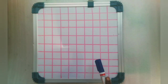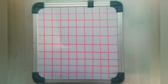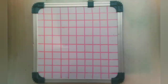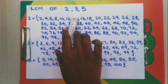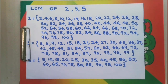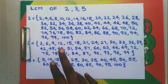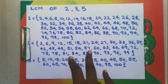To find the LCM of given numbers, we can use a grid on a board or paper. We are going to find the LCM of 2, 3, and 5. The least common multiple is the smallest number which is a common multiple of two or more given numbers.